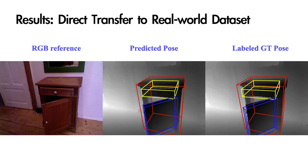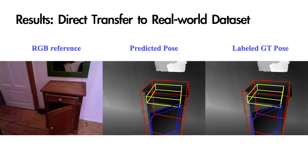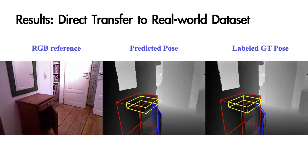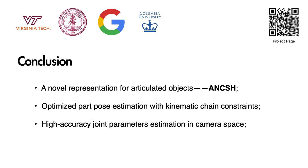We test our model trained on simulation data directly on real-world depth images from an instance-level pose estimation dataset. Here are the results on the cabinet instance with both 1D revolute and 1D prismatic joints. To conclude, we present an approach for category-level pose estimation of articulated objects. To accommodate unseen object instances with large intra-category variations, we introduce ANCHE and a deep neural network capable of predicting ANCHE from a single depth image. Our experiments demonstrate our method significantly improves accuracy for both part-pose prediction and joint parameter estimation. Data and code are available on the project page. Thank you.